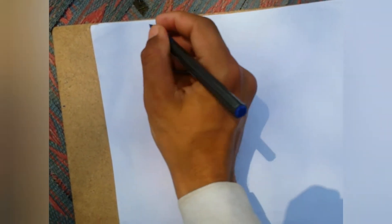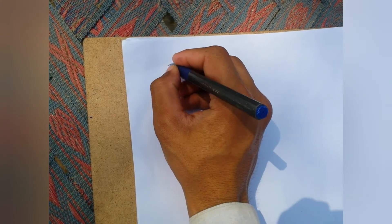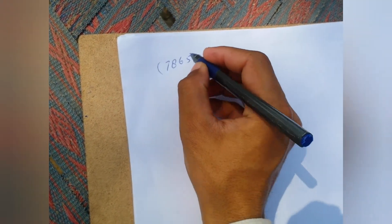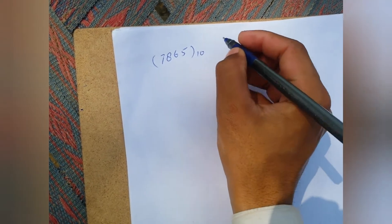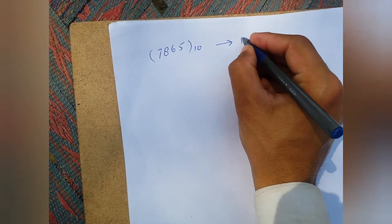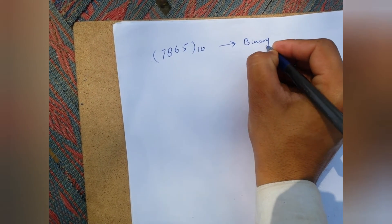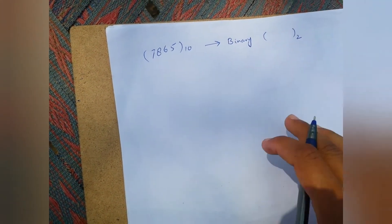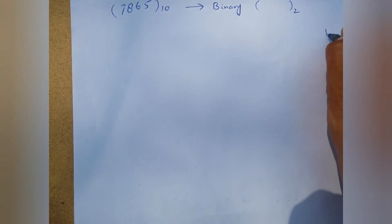Bismillahirrahmanirrahim, assalamualaikum. Today I am going to discuss how to convert any decimal number into binary number. We have a decimal number 7865 base ten, and we are going to convert it into binary. Binary has base two, so we write base two.